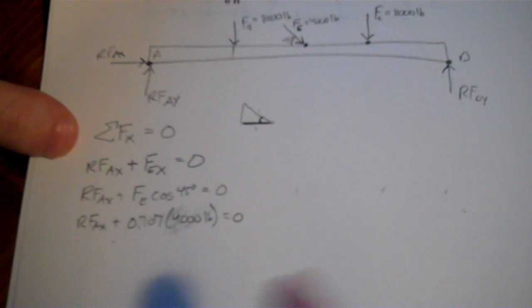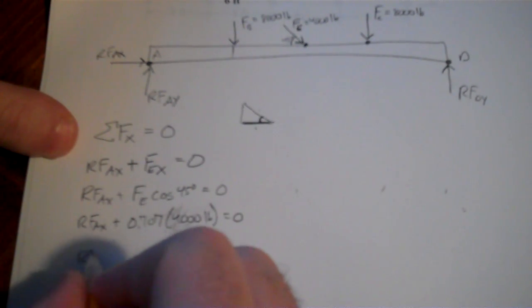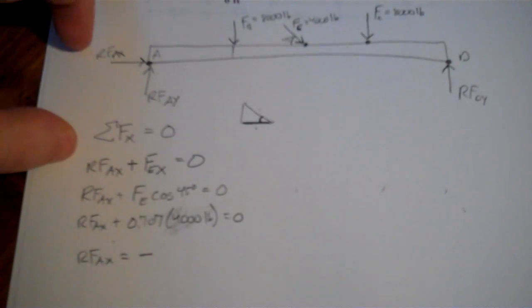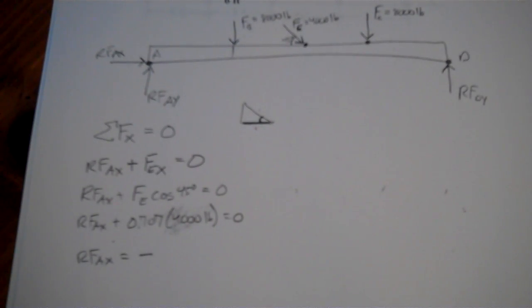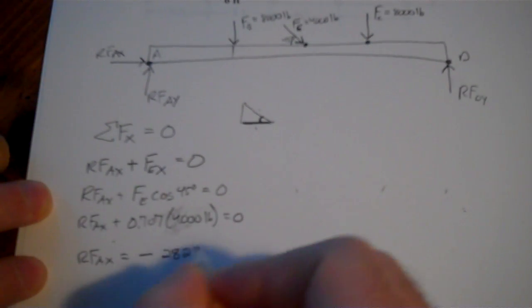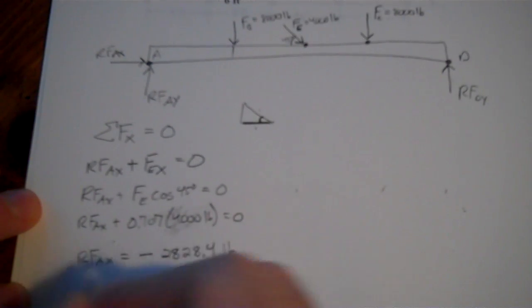So if I take all of this to the other side and I subtract all of that, since I'm subtracting it and I'm subtracting that from zero, it's going to end up being negative. And if I plug a calculator real quick, 4,000 pounds times 0.707, or sorry, 2828.4 if you actually use cosine of 45 degrees.